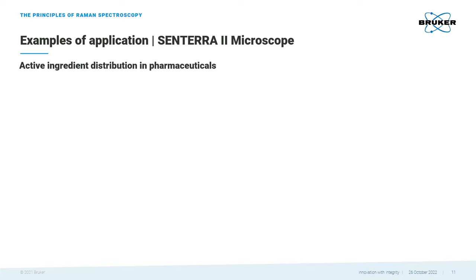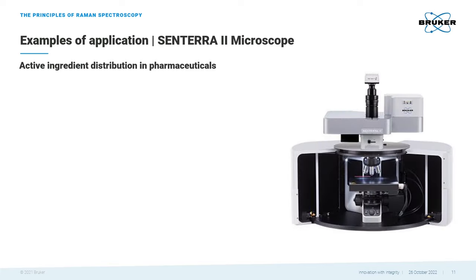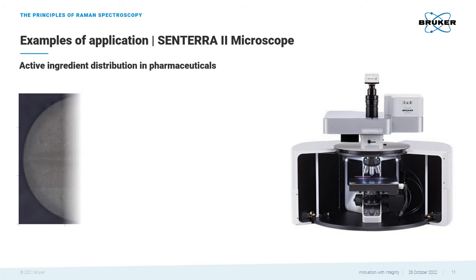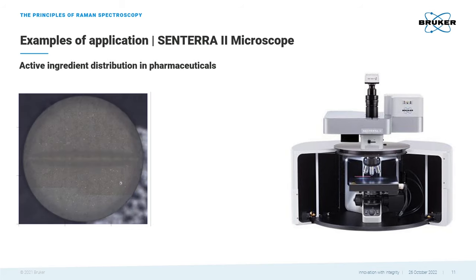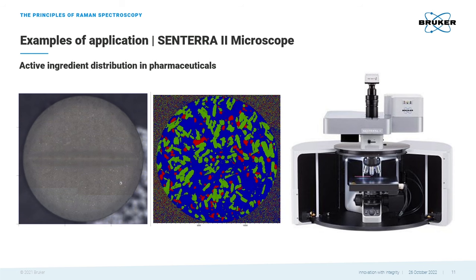Last but not least, here we have an example of a Raman measurement with Bruker's Raman microscope, Sentera 2. It can be used to create high-resolution chemical maps of the sample surface. The distribution of active ingredients in tablets is an important application in the pharmaceutical industry. If the distribution is inhomogeneous, the medical efficiency of the tablet may be enhanced or limited. A chemical image was created and shows the distribution of the active ingredients in the tablet, where each color stands for a different ingredient. We can see that the distribution is relatively homogeneous.